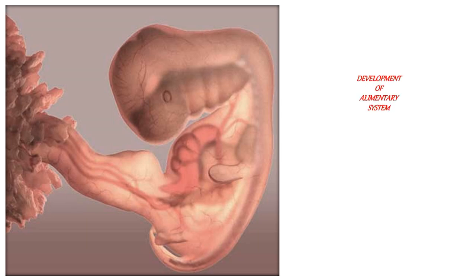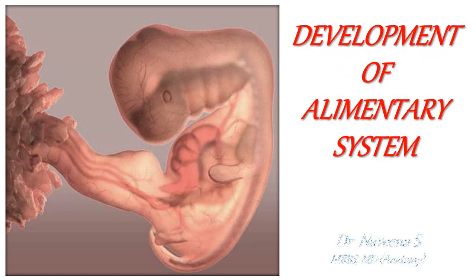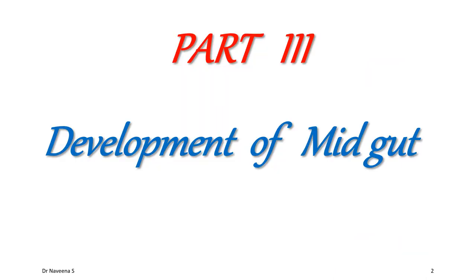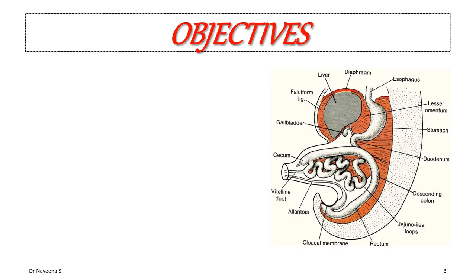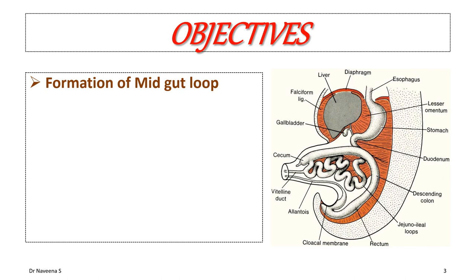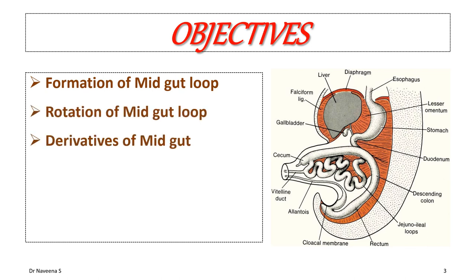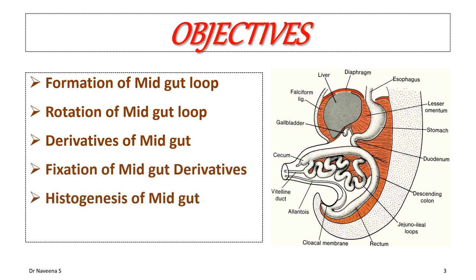Welcome back to the embryology session on development of the alimentary system. Here comes Part 3: development of the midgut. We will be focusing on the following objectives: formation of the midgut loop, its rotation, formation of derivatives of midgut, their fixation, histogenesis of the midgut tube, and congenital anomalies.